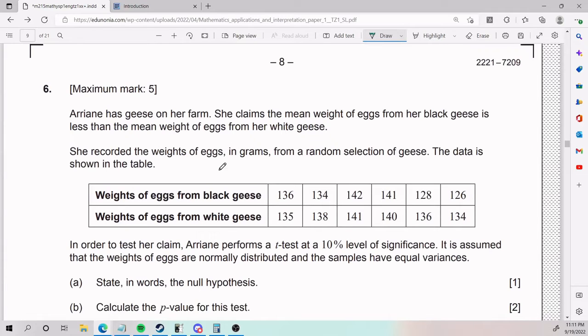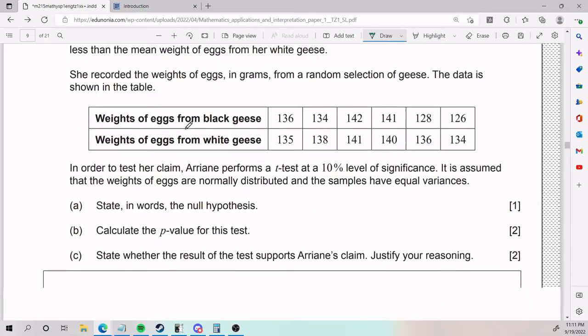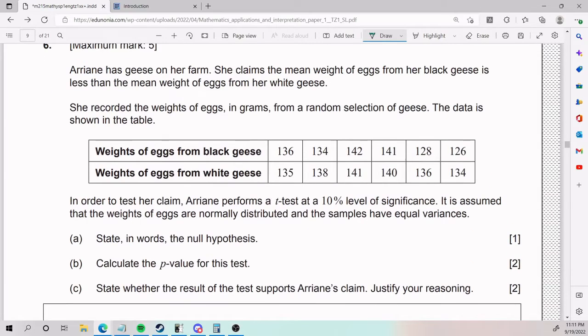Number six, Ariane. Ariane has geese on her farm. She claims the mean weight of eggs from her black geese is less than the mean weight of eggs from her white geese. She records the weights of eggs in grams from a random selection of geese. The data is shown in the table below.